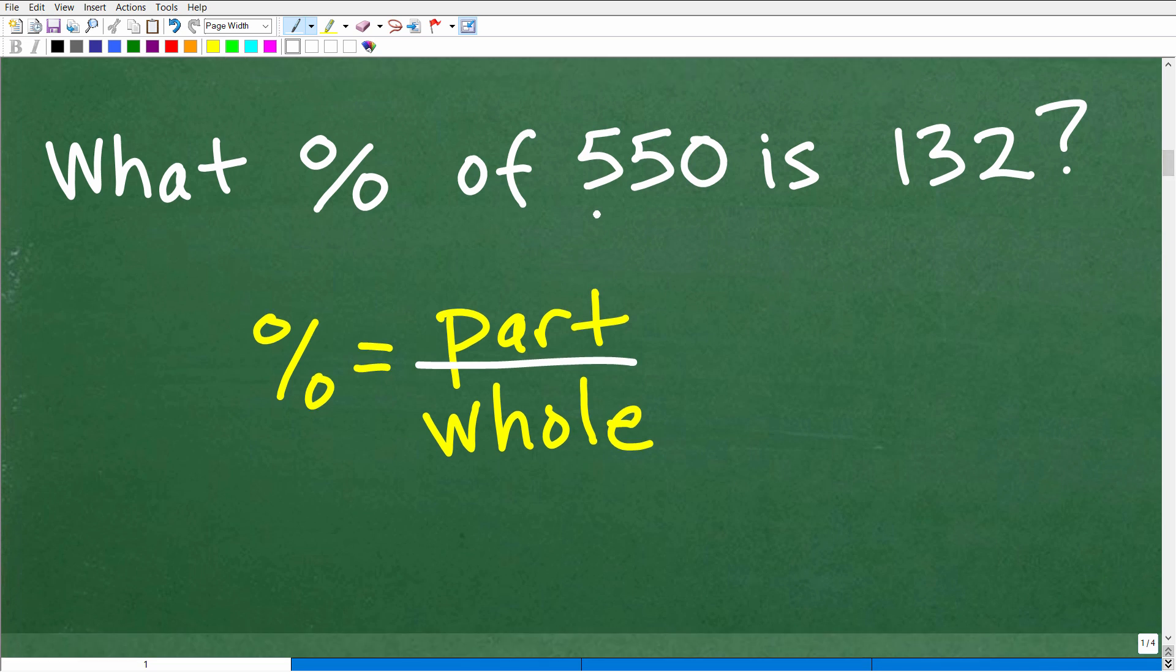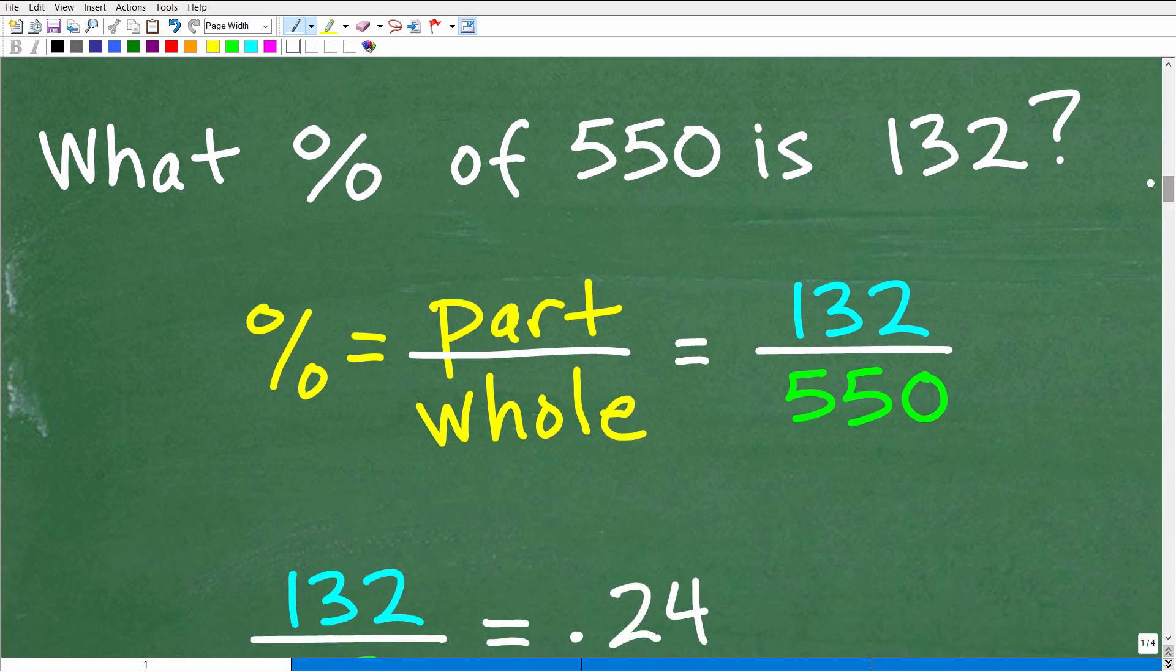And that is, what percent of 550 is 132? Now, we know we're going to have to do stuff. We're going to probably have to divide or whatnot. And if you got this problem right, but you were guessing, that's not really good either. So we really want to be in control of what's going on. So in this particular problem, a good model to use here is to think of percent as a part out of the whole. So what percent of 550 is 132? So let me ask you, what number is representing the whole and what number is representing the part? Because if you can identify that, then you can solve this problem.